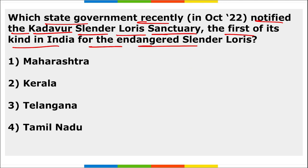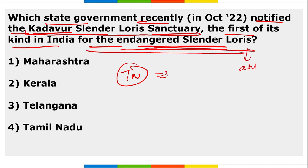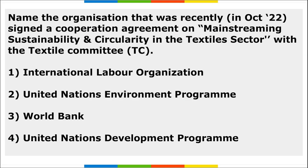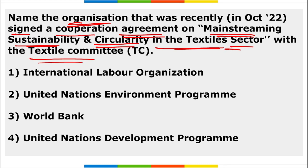Tamil Nadu notified the Kadavur Slender Loris Sanctuary, the first of its kind in India for the endangered slender loris. It will be built at a cost of ₹5 crore by 2026. The United Nations Environment Programme (UNEP), headquartered in Nairobi, Kenya, signed a cooperation agreement on mainstreaming sustainability in the textile sector.